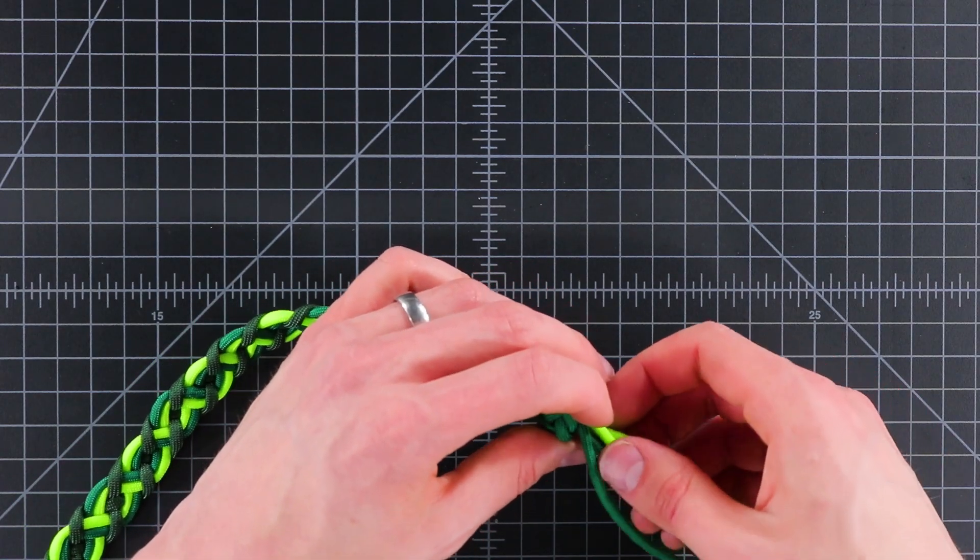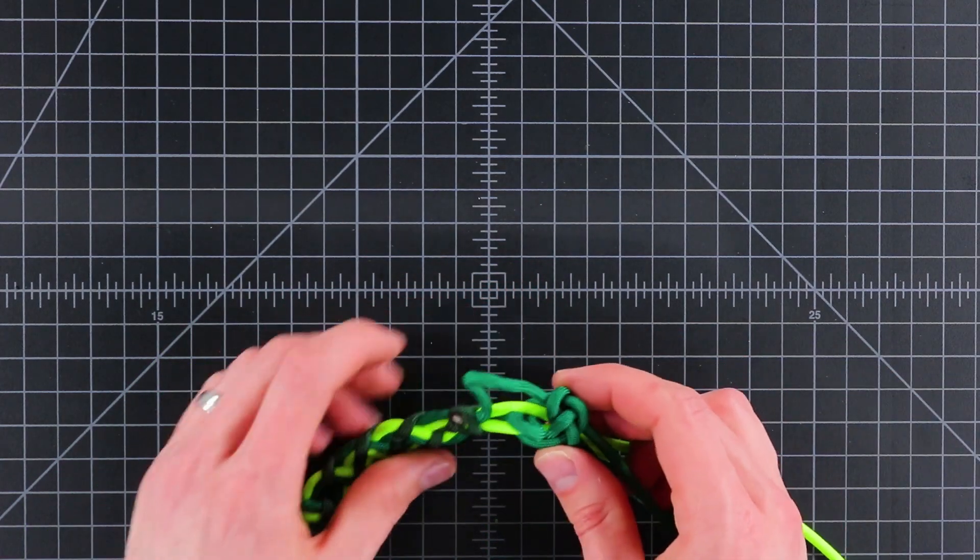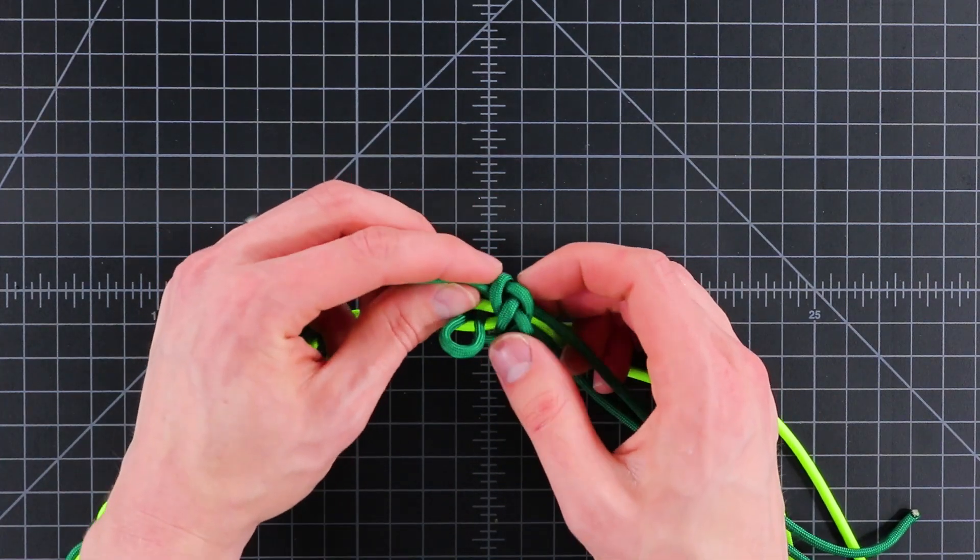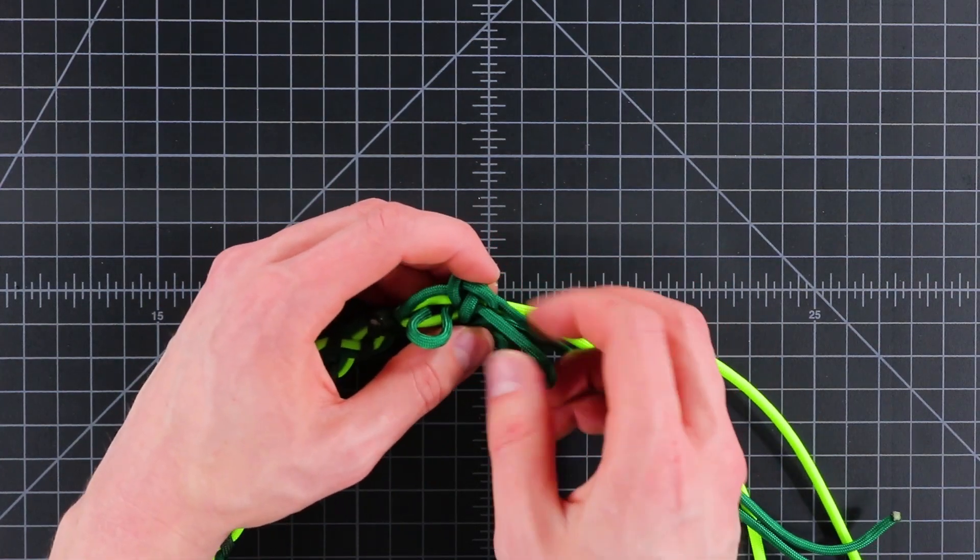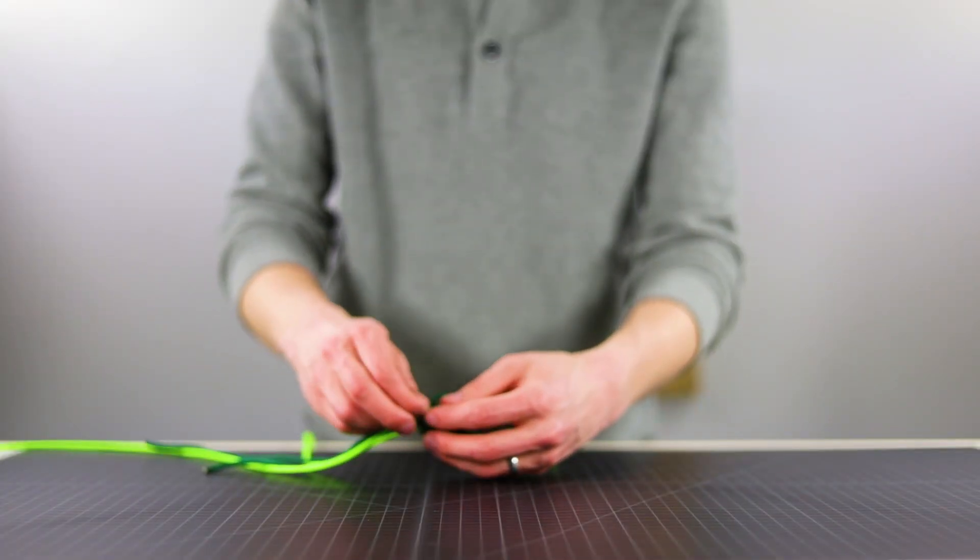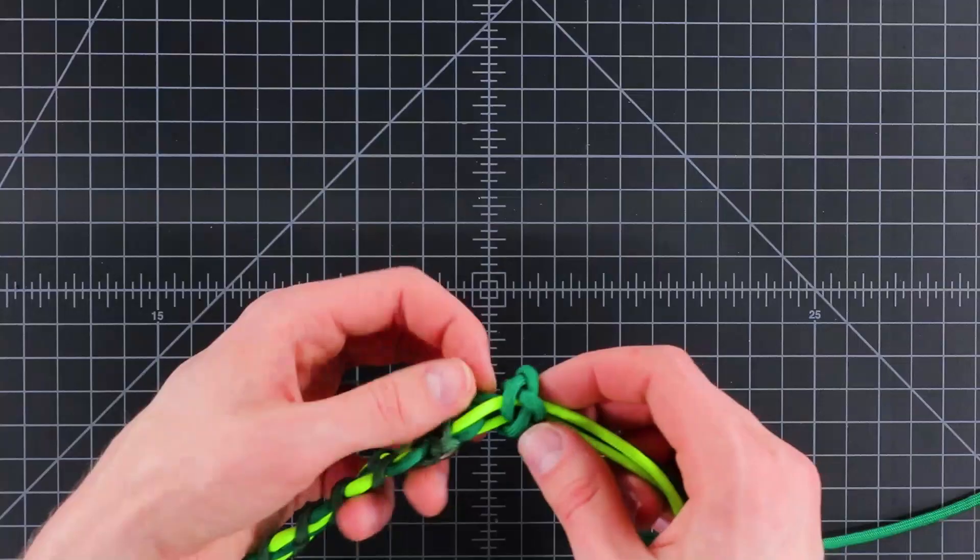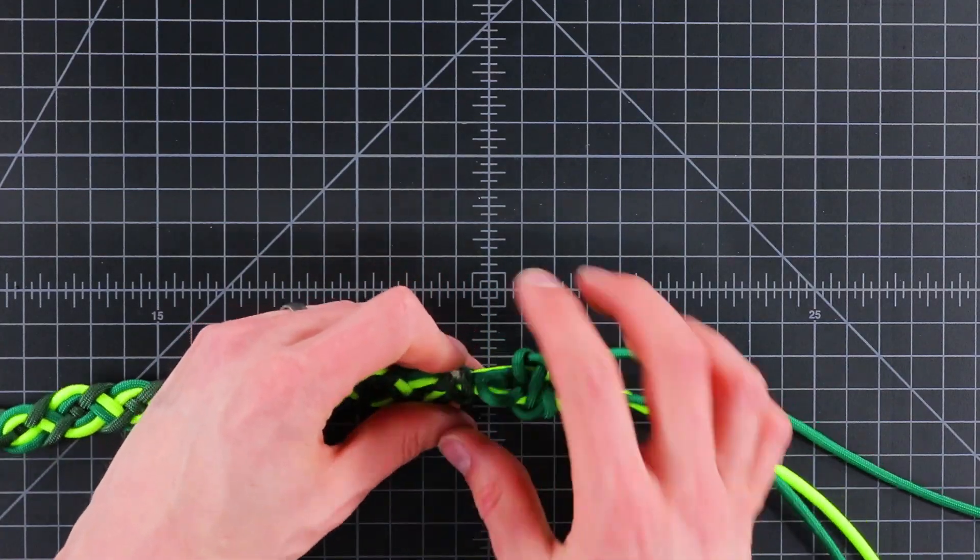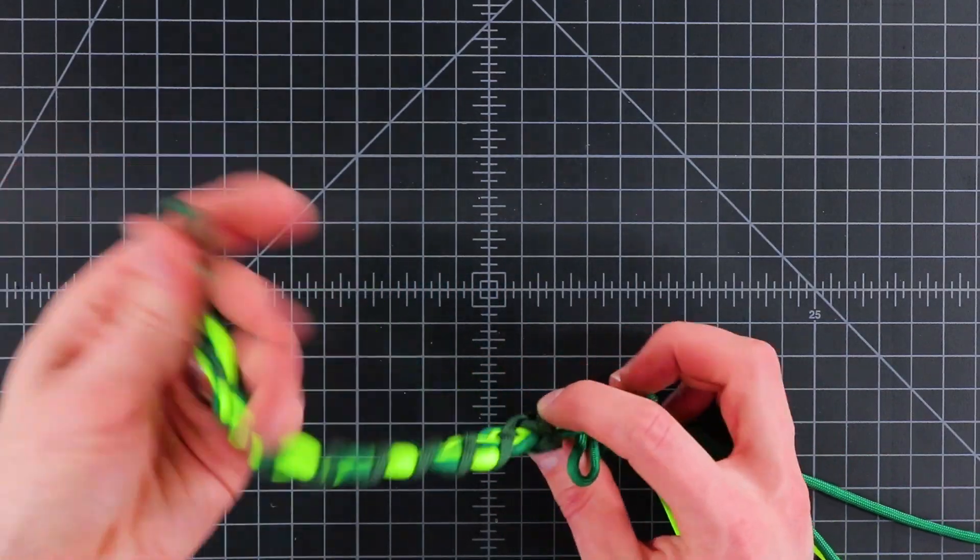All right, so now we want to feed each of those individual cords down to tighten it to the right spot. We just kind of have to thread them through. You do want to leave a little bit of a stem here for this loop to grab onto.